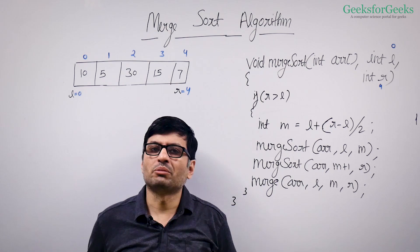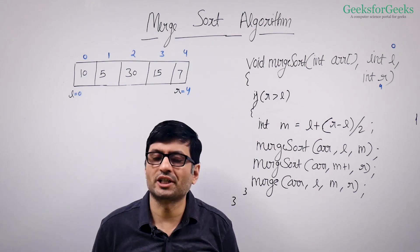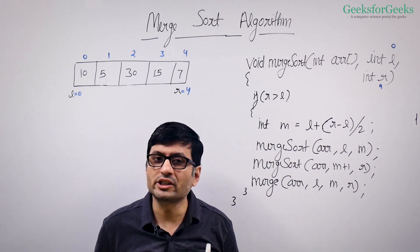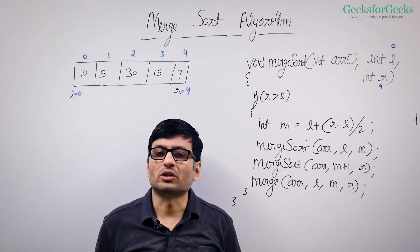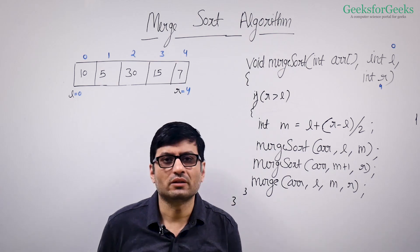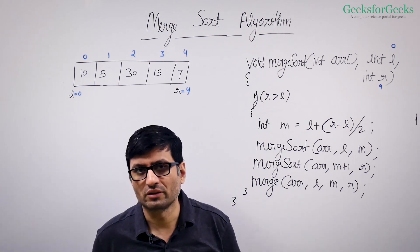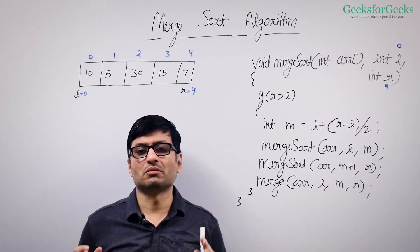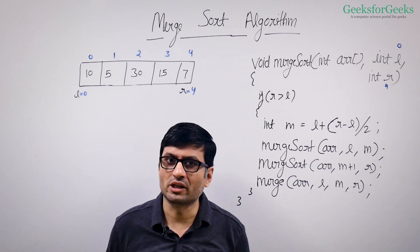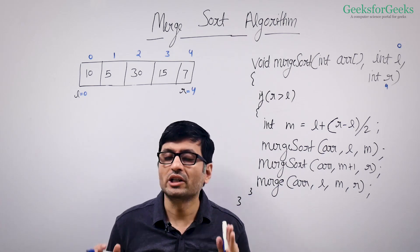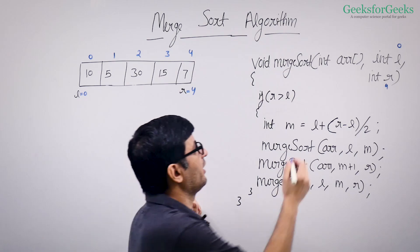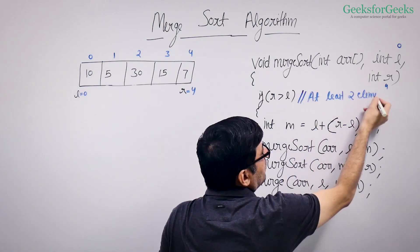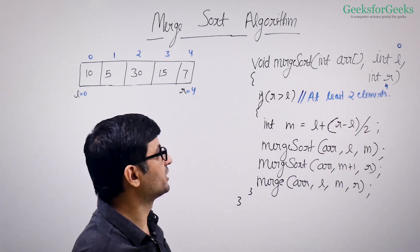After taking the input array, we first check: does this input array contain at least two elements? Because if there is one element in your input array, then there is nothing required to be done — it's already sorted. To do divide, then sort, and then merge, we need to have at least two elements. So we put this condition: at least two elements should be there. Then only we perform our merge sort logic; otherwise, we do not do anything.